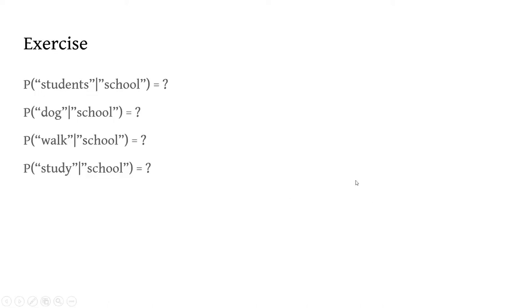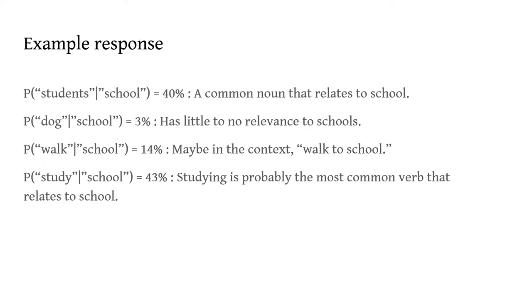So here's an exercise. Given these words, I want you to find the probability that student occurs in the context of school, or that dog occurs in the context of school, walk, or study. And of course, this all has to add up to 100%. So I'll give you a moment to do that. But I will now give you the probabilities that I assigned to these. Now of course, this might be different depending on how you looked at this. This is just an example of how a human might assign probabilities to these. So for students, I gave it about 40% probability because there's a common noun that relates to school. Dog, I gave it about 3%. There isn't really much relevance, maybe unless it's in the context of, oh, I brought my dog to school or something like that. I gave walk about 14%. I thought, you know, maybe the only use case of the word walk in relevance to school might be like, oh, I walked to school or I walked around the school. And then for study, I gave that a solid 43% because studying is a very common verb that relates to school.